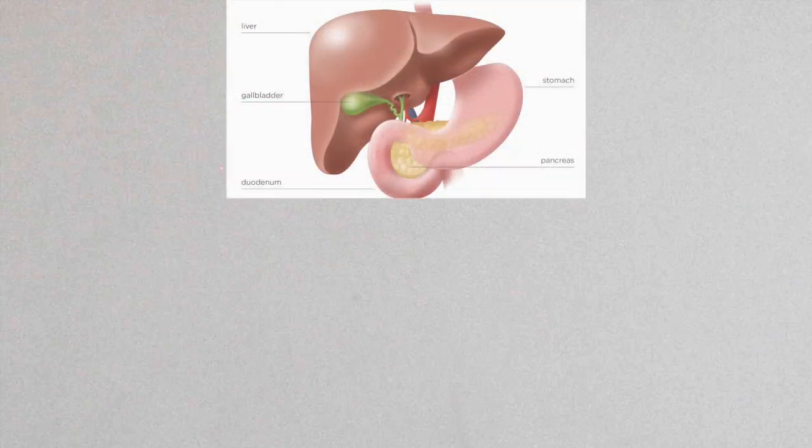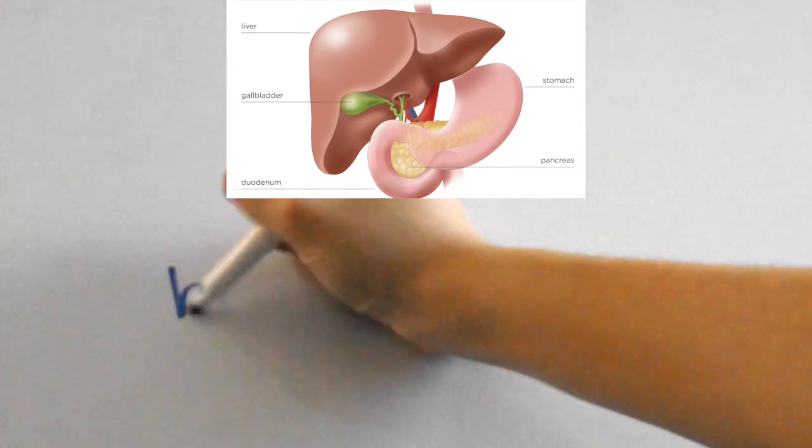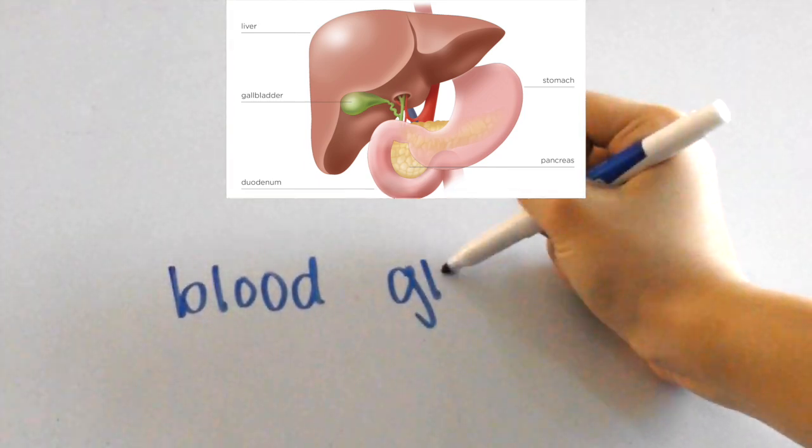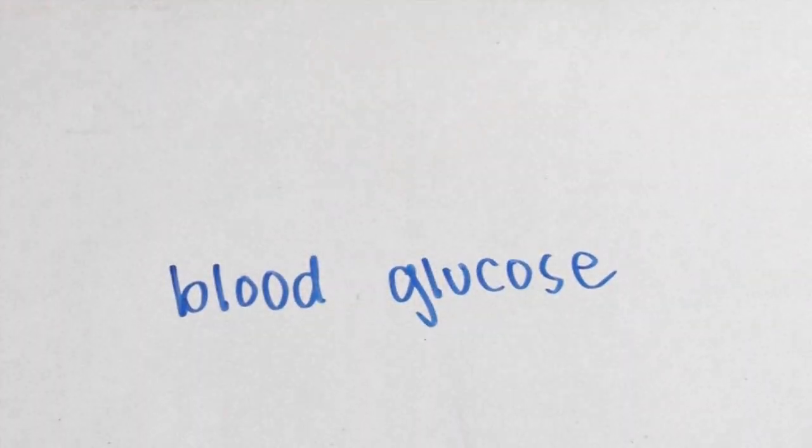An example of negative feedback would be how your pancreas functions. For example, pancreatic hormones such as insulin and glucagon regulate the glucose levels in blood.